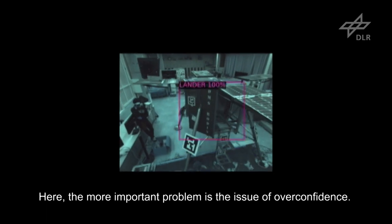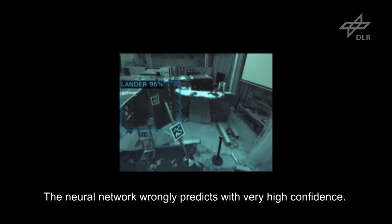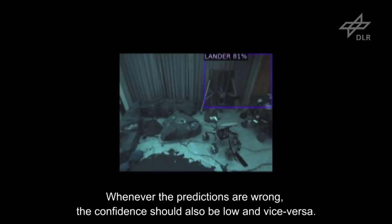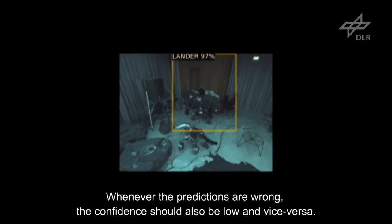Here, the more important problem is the issue of overconfidence. The neural network wrongly predicts with very high confidence. Whenever the predictions are wrong, the confidence should also be low, and vice versa.